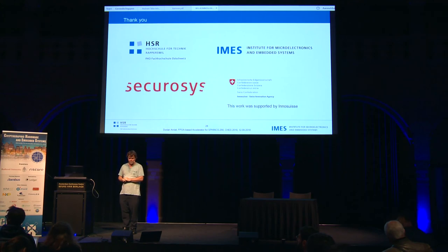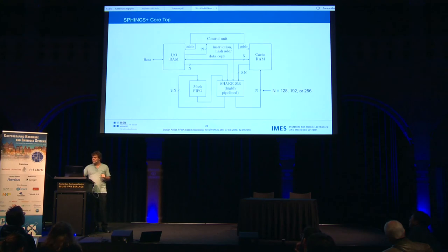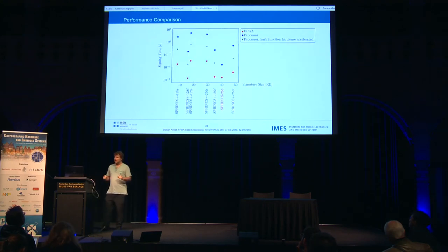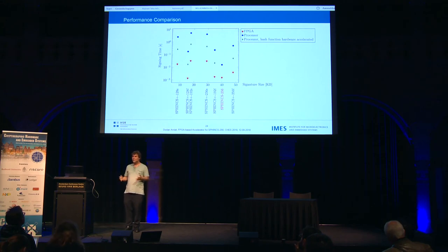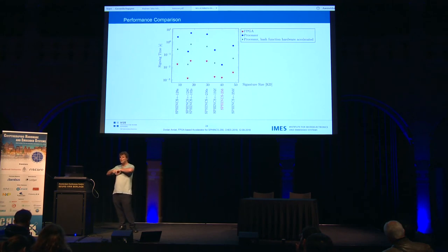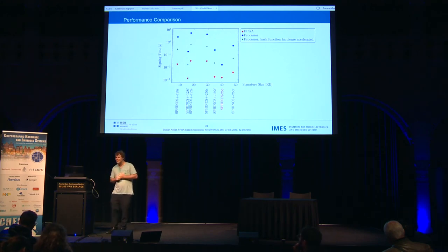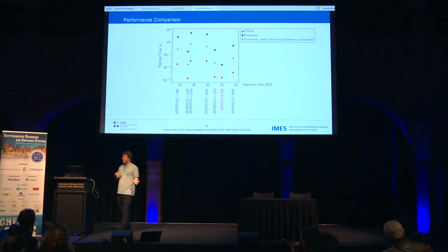Question: Which processor did you use for your performance comparisons? Answer: I think it's a 3.5 GHz processor — the one used by the SPHINCS+ authors. I don't know off-hand which processor it is, it's also not my code. Someone suggested it's a Skylake at 3.5 GHz, something like that.